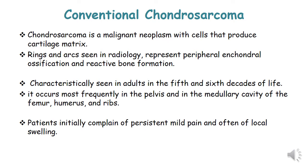Conventional Chondrosarcoma is a malignant neoplasm whose cells produce cartilage matrix. Radiologically, it is characterized by rings and arcs, representing peripheral enchondral ossification and reactive bone formation. The tumor is seen in adults in the fifth and sixth decades of life. It occurs most frequently in the pelvis and medullary cavity of the proximal humerus, then the ribs. Patients initially complain of mild, persistent pain.